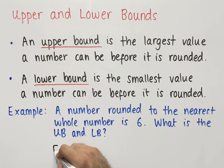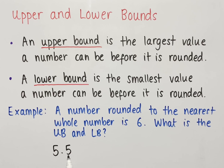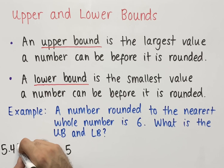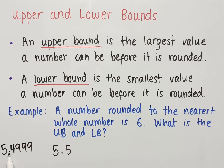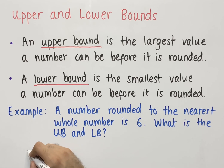If we have 5.5, we look at the first decimal place, which is 5. Because 5 is 5 or more, this number rounds up to 6 to the nearest whole number. There is no other number less than 5.5 that would round up to 6, since any number less than this would have a 4 in the first decimal place and would always round down. For instance, 5.4999 rounded to the nearest whole number equals 5. Therefore, 5.5 is the lower bound.